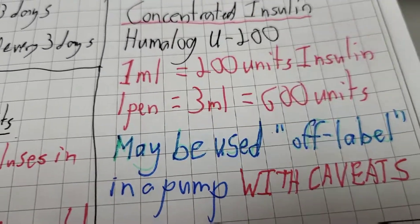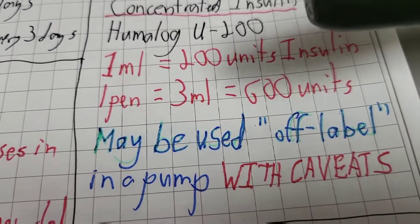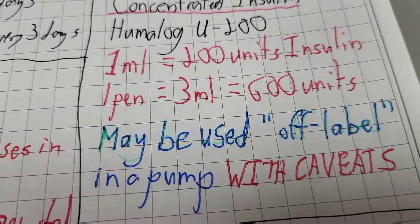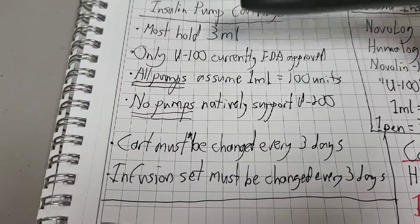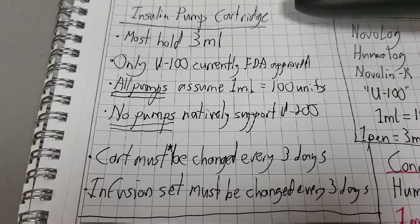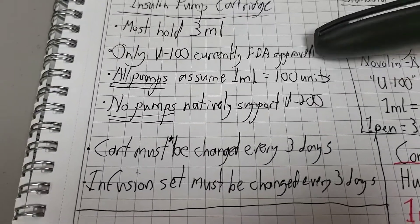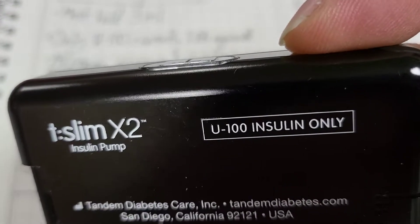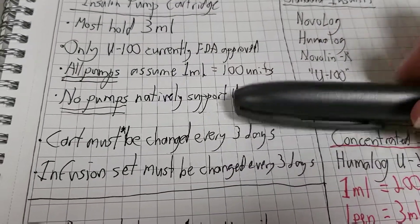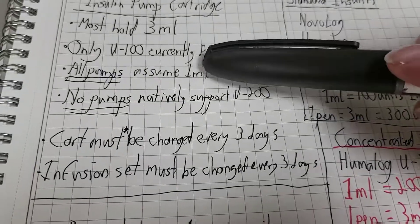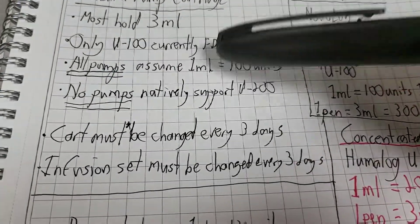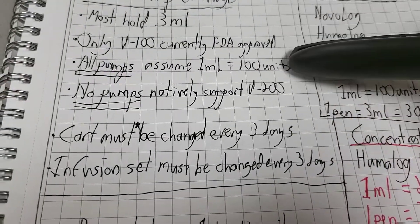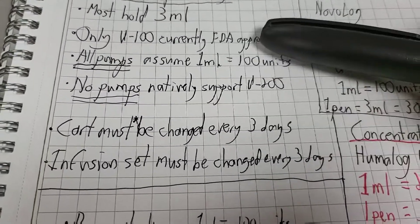This can be used off-label in the pump, but there's some caveats. Most pump cartridges hold three milliliters of whatever you put in them. Only U100 being currently approved, only U100 being technically supported by the pump, means the pump assumes a hard assumption that each milliliter, all pumps, each milliliter contains 100 units. They don't understand U200.